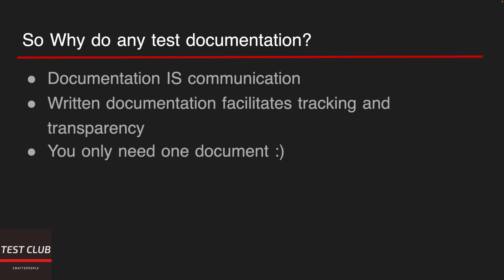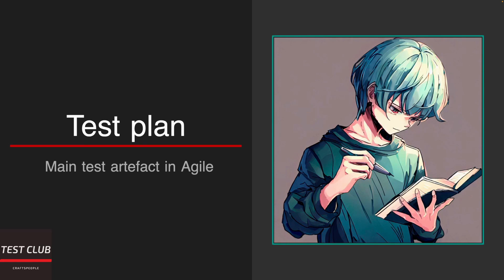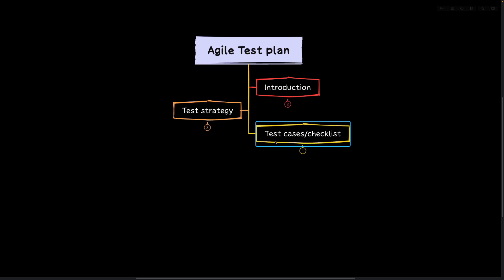That's a really good question. I think any documentation is communication, and written documentation facilitates tracking and transparency. It's really easy to forget what was discussed a couple of weeks ago, but you can always open documentation — different versions if necessary — and see what was going on, and make projections about the future. In Agile, the good news is that for almost all testing activities you would need just a single document, which is — unsurprisingly — the test plan.